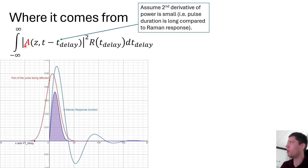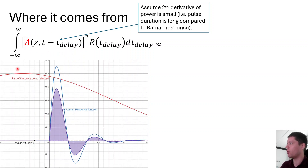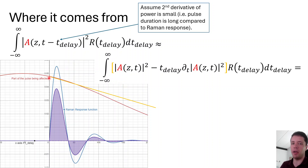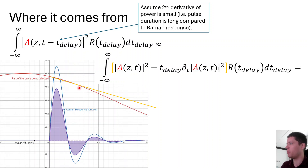Now we're going to assume that the second derivative of the power function is quite small — in other words, that the duration of the pulse is much larger than the duration of the response function. In this case, the power at different times in the past can simply be linearly extrapolated from the present power and the current derivative. As we go further into the past, the discrepancy between the actual pulse power and the approximation increases, but fortunately the response function decreases quite quickly for larger times, so the discrepancy doesn't end up mattering very much.